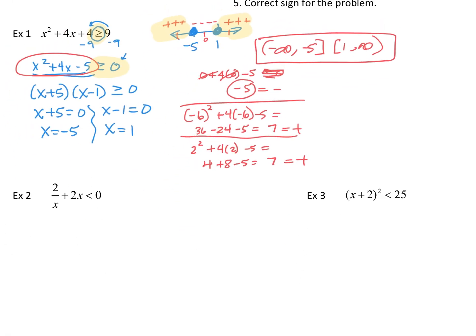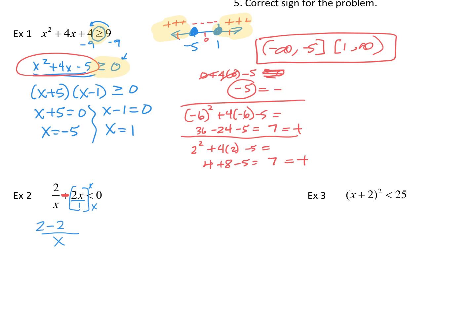Let's look at number 2. There is one typo — this should be a minus 2x, so fix that if it's not already fixed. Notice I need to get a common denominator of x, which means I multiply the second term by x over x. So I end up with 2 minus 2x squared less than 0, all over x. Now I need to find my key points by separating the numerator and denominator.